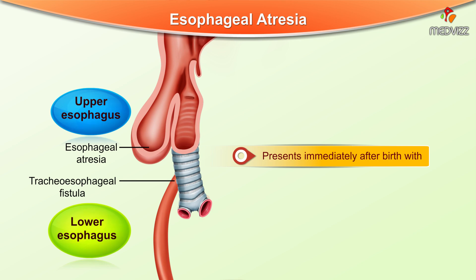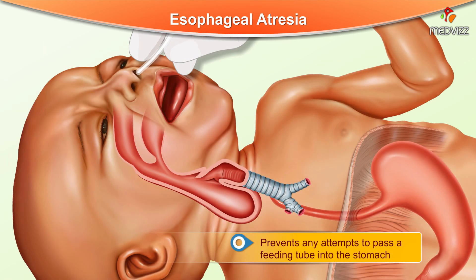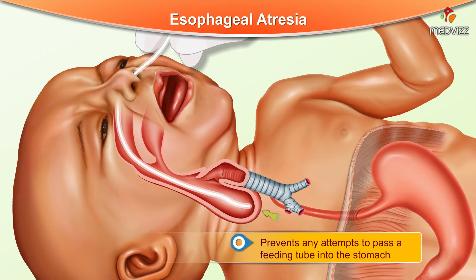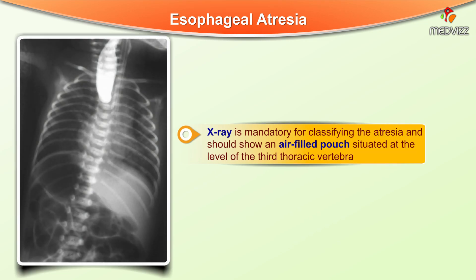It presents immediately after birth with cyanotic attacks, foaming at the mouth, and cough. It is diagnosed when there is a failure to pass a feeding tube into the stomach. X-ray is mandatory for classifying the atresia and should show an air-filled pouch situated at the level of the third thoracic vertebra.